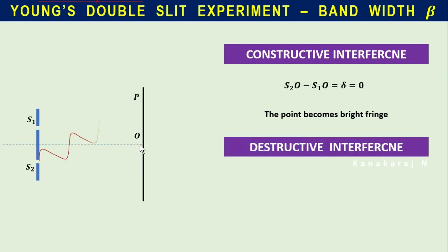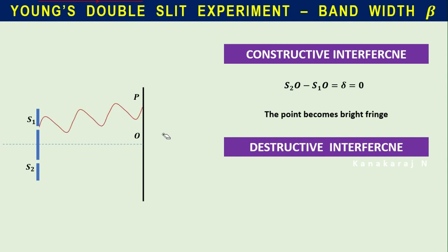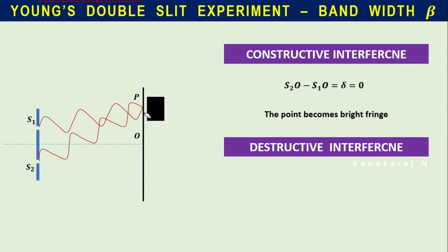Now let us go for destructive interference. From S2 the waves go to point P — there are three and a half waves between S2 and P. Between S1 and P there are three waves. So S2 is accommodating one half-wave extra. At point P, the waves coming from S1 and S2 meet 180 degrees out of phase — one goes up, one goes down — so the effects cancel each other, the intensity becomes zero. This is called destructive interference.